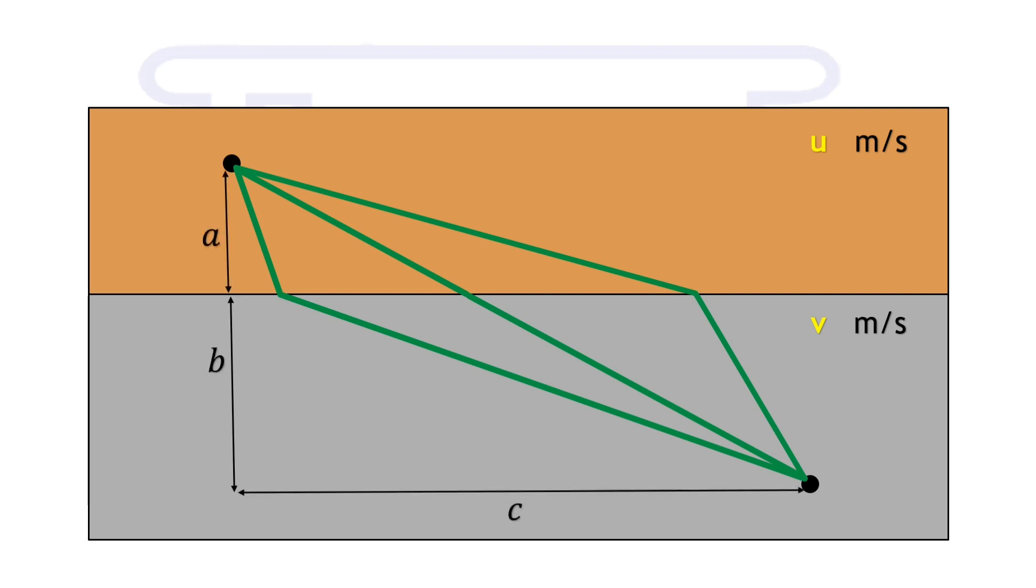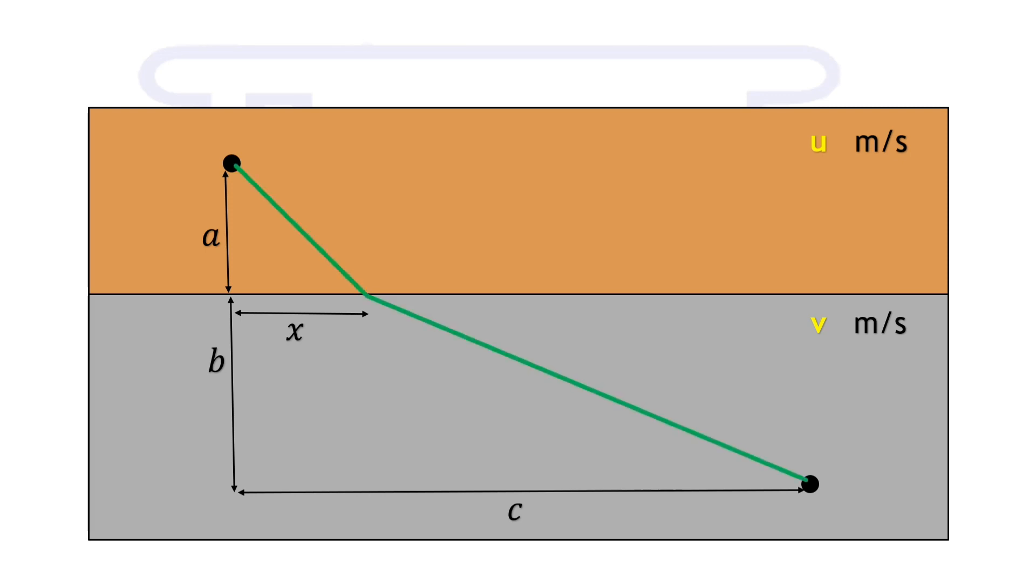Suppose A, B and C are the distances as shown on the screen. Let the horizontal distance after which we have to take turn is x. So the distance which we have to travel with u meter per second is root a squared plus x squared and remaining distance is root b squared plus c minus x squared.